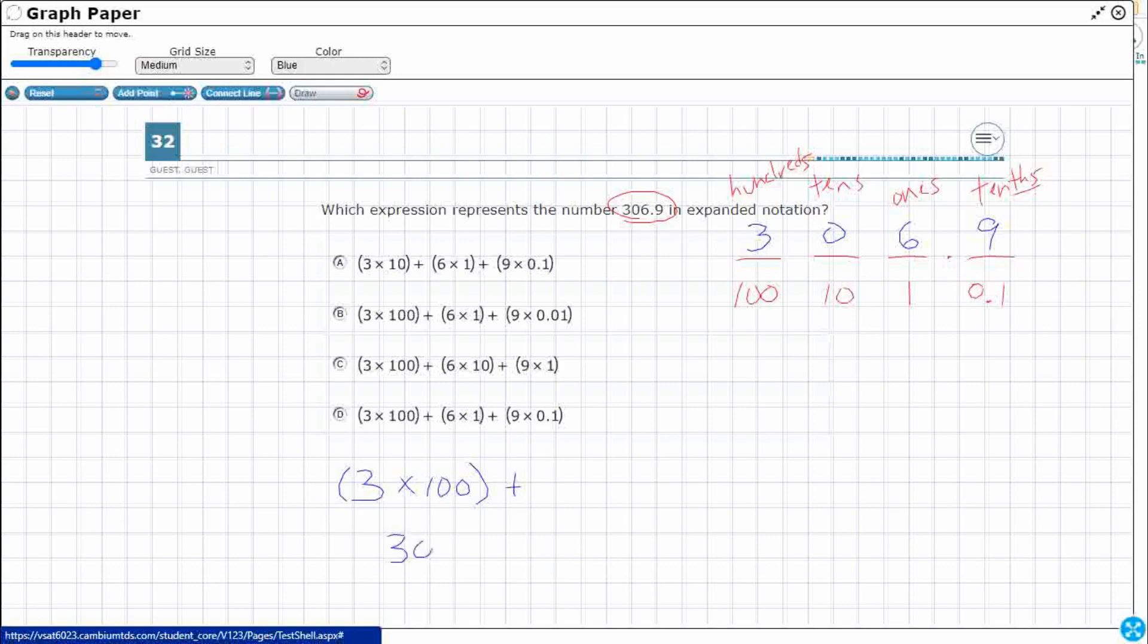And then you add it. Now if I were doing expanded form, I would go like this. 3 in the hundreds spot is worth 300. Expanded notation is 3 times 100. So I'll do both. So I'll put notation up here and I'll put expanded form right here. And they're both expanded.